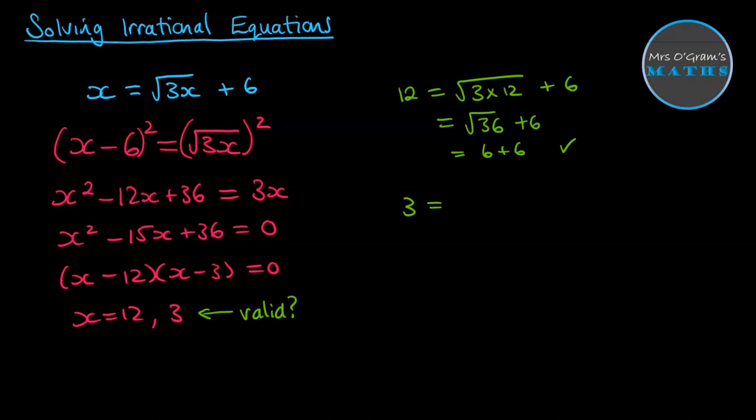Let's check with 3. Does 3 equal the square root of 3 times 3 plus 6? Well, 3 times 3 is 9. The square root of 9 is 3 plus 6. That does not work. So our final solution is x equals 12 as the only valid solution that came out of our working out.